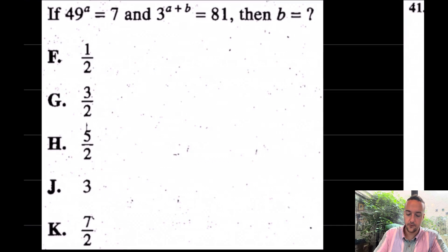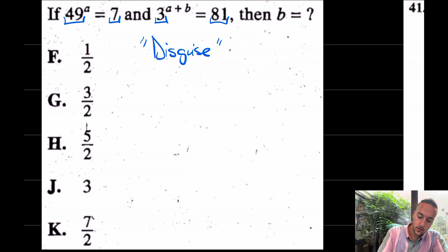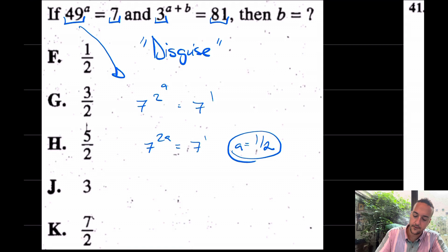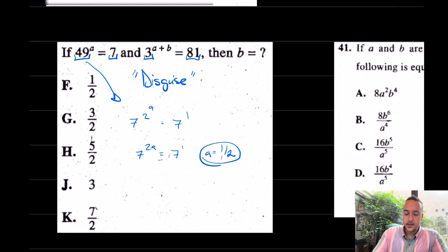When you're ready, come over here for this question. This is another one from an ACT, really in the 50s. Look at this juicy number, 49 and 7, 3 and 81. I wonder if our skill of disguise will come into play here. I think it will. What is 49? 49 isn't really 49. 49 is actually 7 to the second to the second to the A equals 7 to the 1. From there, understand that we have 7 to the 2A equals 7 to the 1. A must have been equal to one half or 0.5.